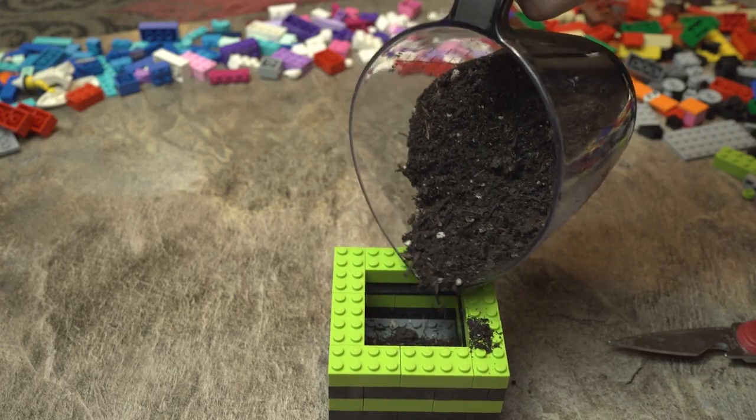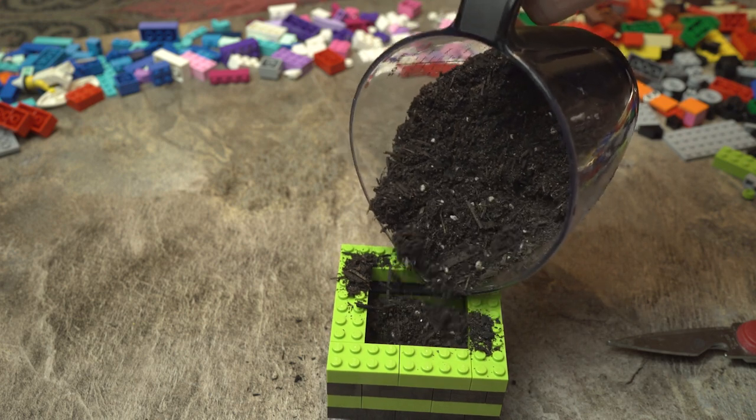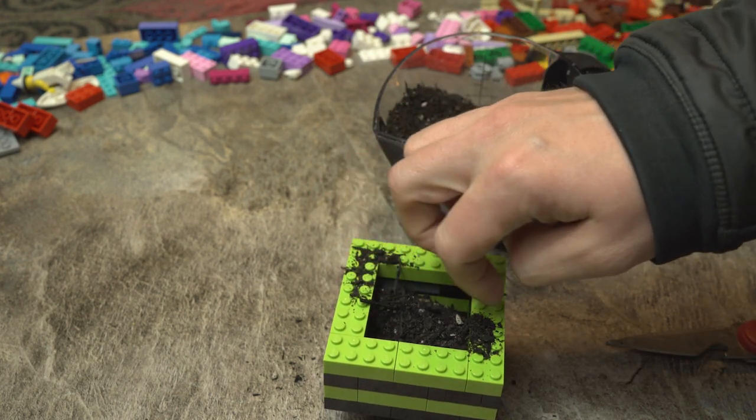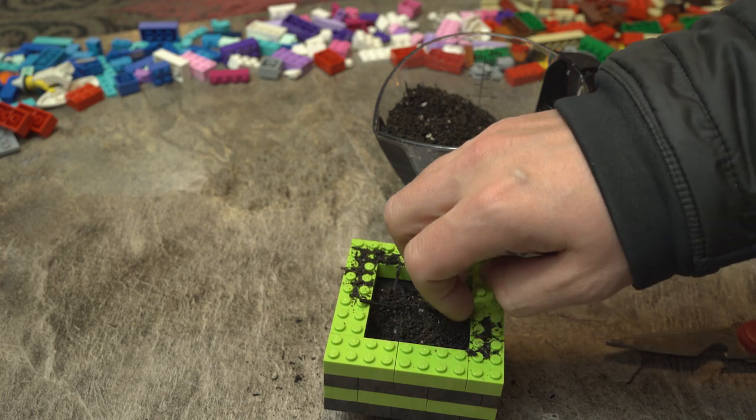After adding a bottom panel under the hole, I grabbed a little potting soil from another plant I had and filled up the pot. This could easily house herbs, plants, small flowers, anything really.